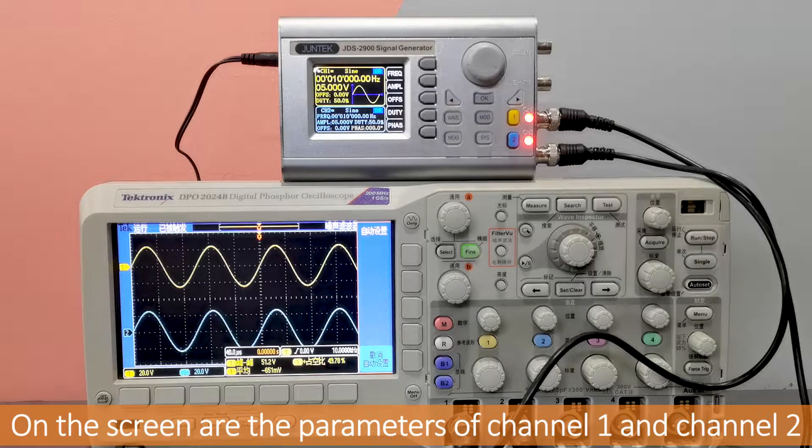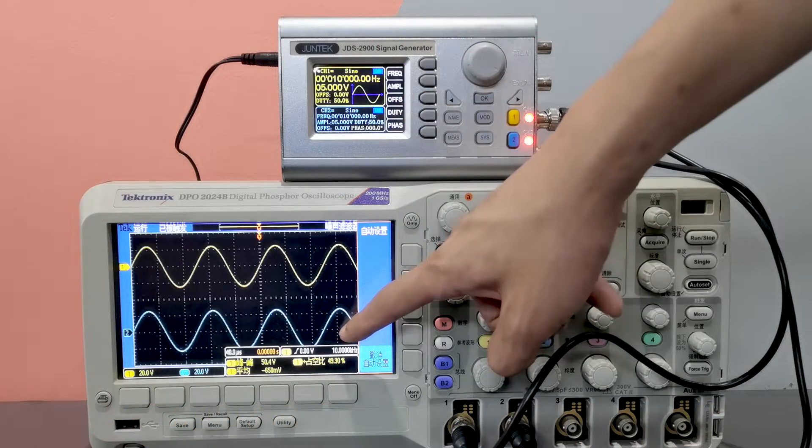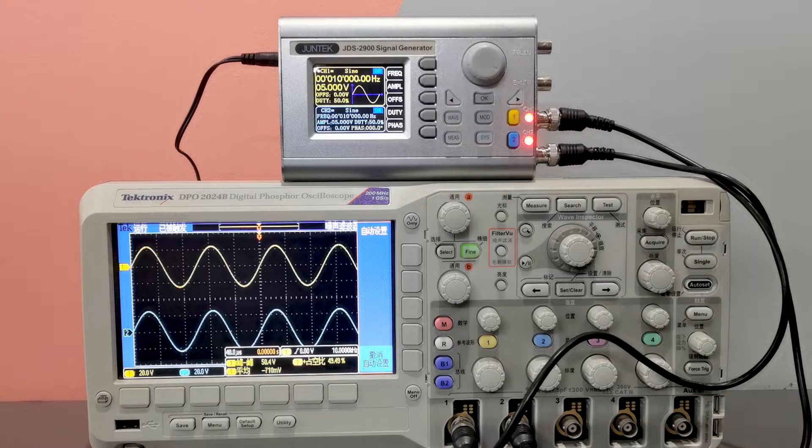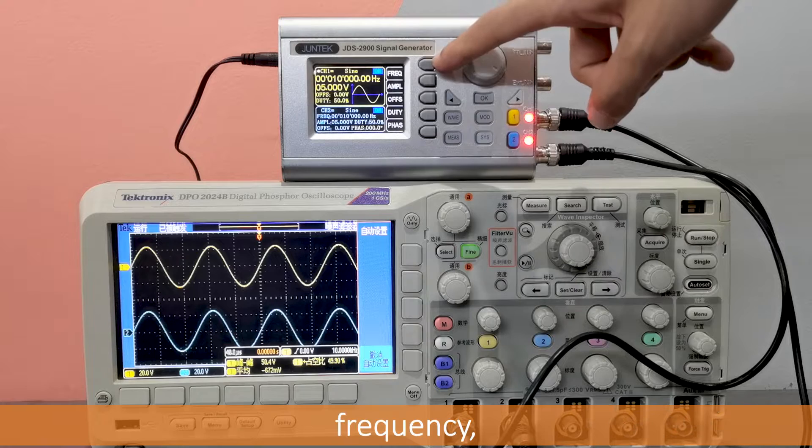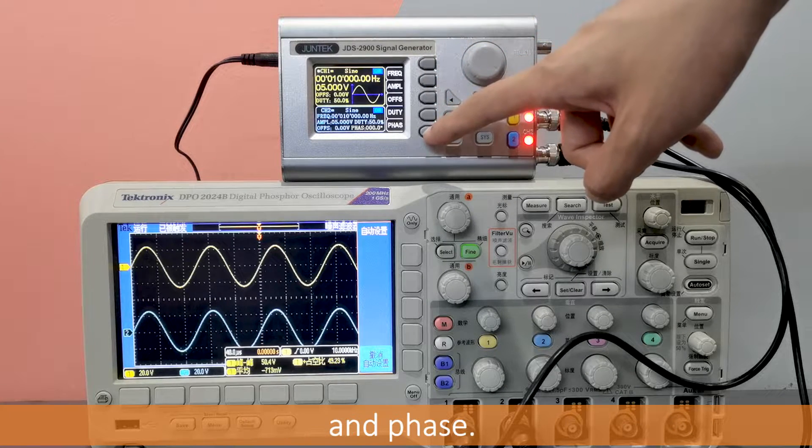On the screen are the parameters of channel 1 and channel 2: frequency, amplitude, offset, duty cycle, and phase.